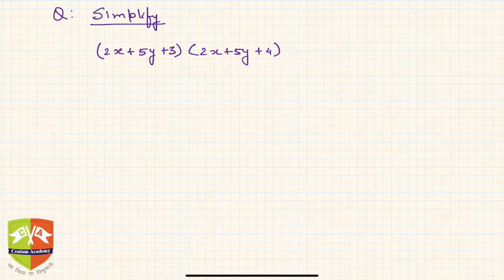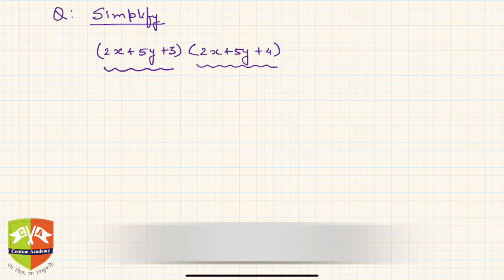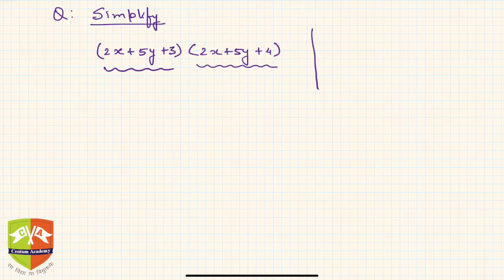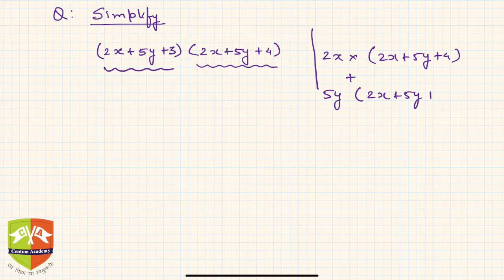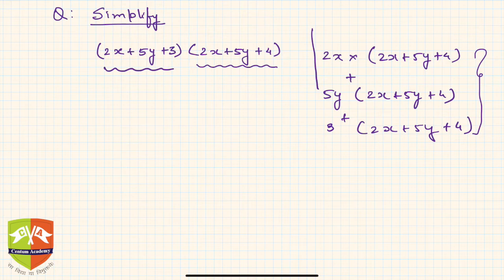Let's continue with our problem solving sessions. You would have seen problems where you have to simplify (2x + 5y + 3) times (2x + 5y + 4). These are two factors and you have to find their product. One way is the standard expansion: 2x times (2x+5y+4), plus 5y times (2x+5y+4), plus 3 times (2x+5y+4). This is the usual algebraic expansion, but it will take a lot of time.